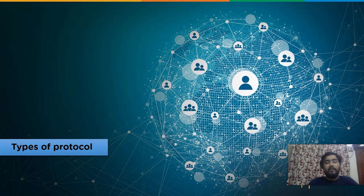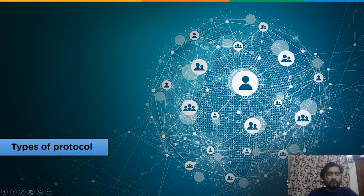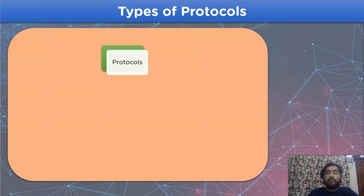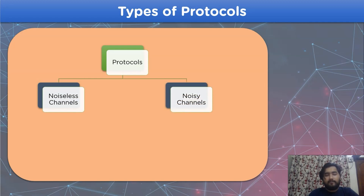Now let's move on to the different types of protocols available in a network channel. The protocols can be divided into two different types: noiseless channels and noisy channels. The noise part refers to any external interference, data error, or duplicate transmission in the network channel. Furthermore, both can be divided into further subdivisions.